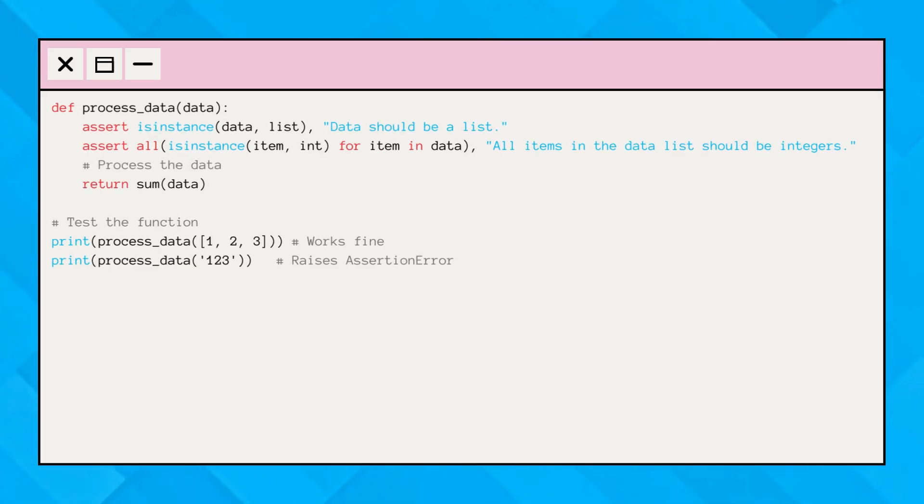Here's another example to show how assert statements can make our code more understandable and reliable. In the process_data function, the assert statements clearly state that data should be a list and all items in the list should be integers. This not only helps catch errors but also serves as a form of documentation.